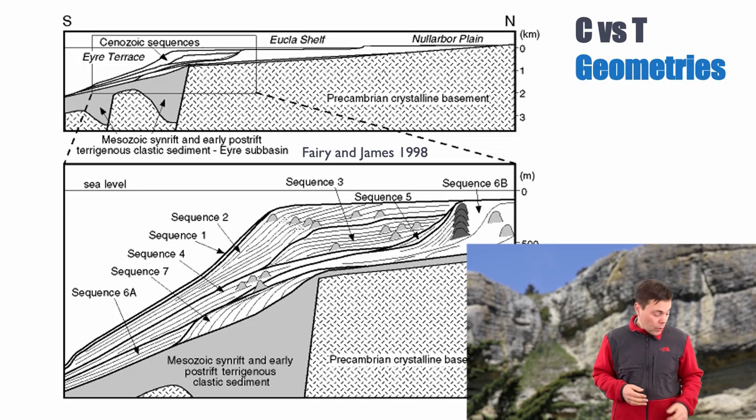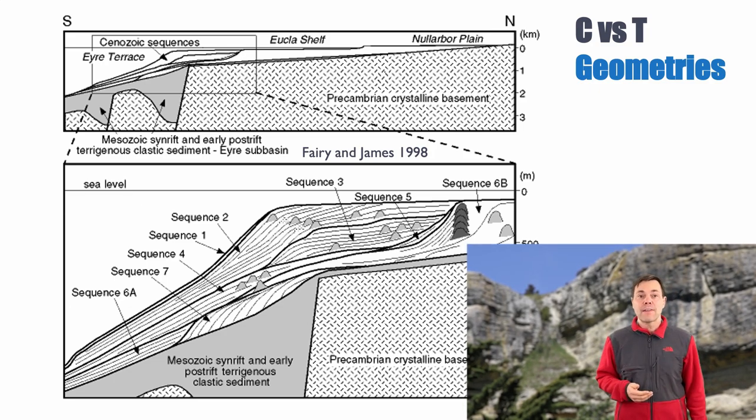Sequence 6b, which has never been drilled, is thought to actually be a T factory sequence, where water temperatures were much higher. What happens on the Euclid shelf is you have cold water coming from Antarctica. This is why it's so cold on this shelf and why autotrophs don't really form here, explaining the presence of the C factory.